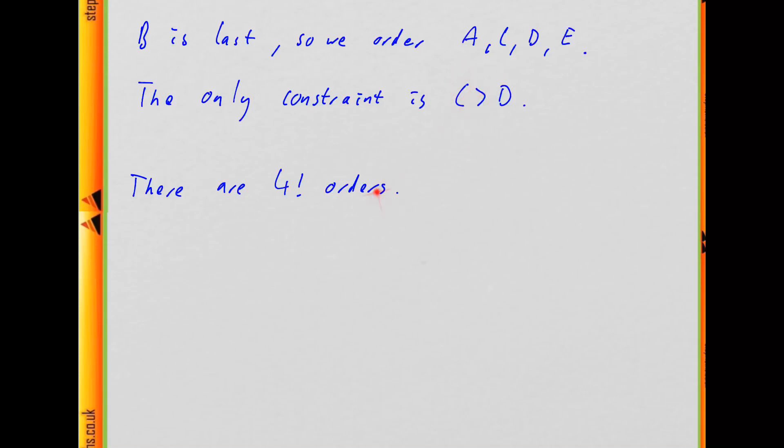How does that change the number of orders? What this means is the orders where C is greater than D count, and the orders where D is greater than C don't count. But each of these orders is going to put C in front of D half the time and D in front of C the other half of the time. So half of them are going to have C before D, the other half are going to have D before C. So that means exactly half of them are going to count, and half of them we're going to have C bigger than D. So that means we're just taking four factorial orders and dividing by two, and four factorial is 24, so we get twelve orders.